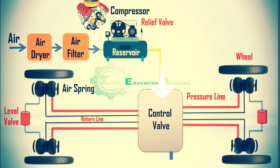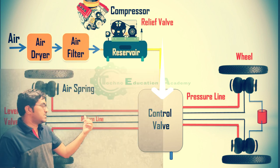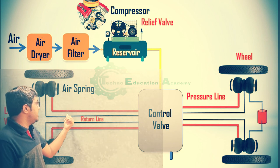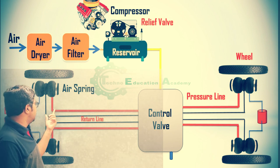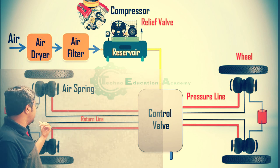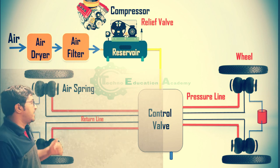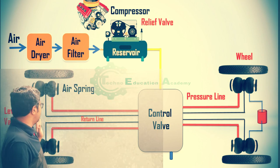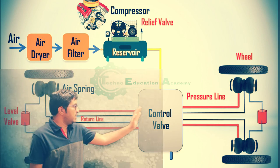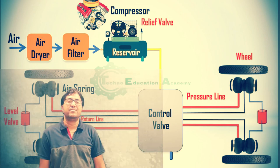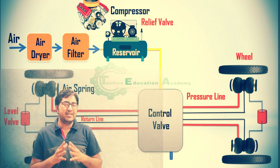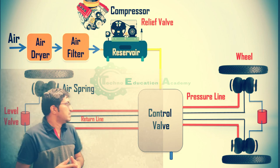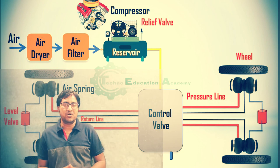The control valve is connected with the air spring through the pressure line and return line. This air spring is also connected with the level valve via the control line. Here we are using two level valves — one on the front side and another on the rear axle side. In the case of a multiple-axle vehicle, the number of axles increases, and as per the number of axles, the number of level valves also increases.